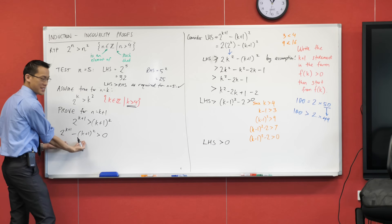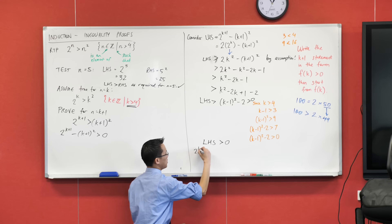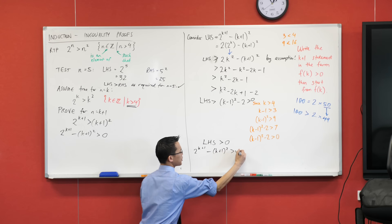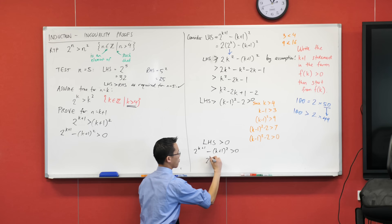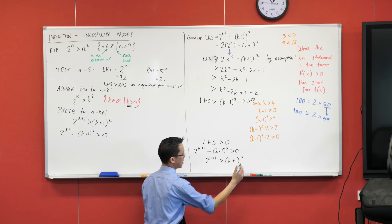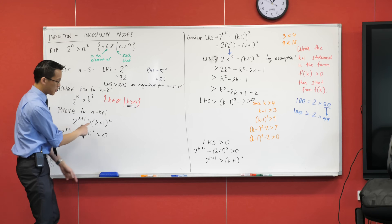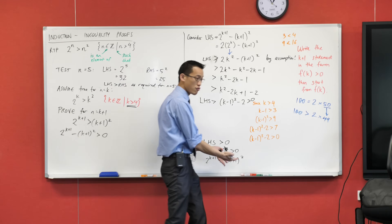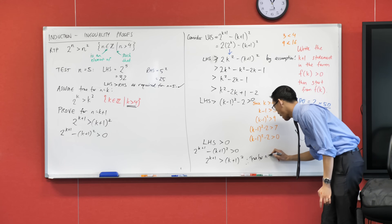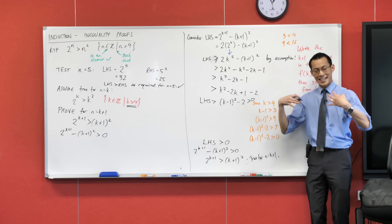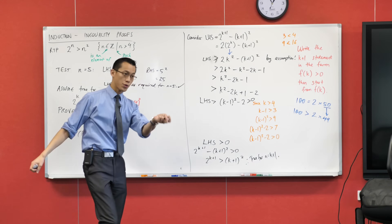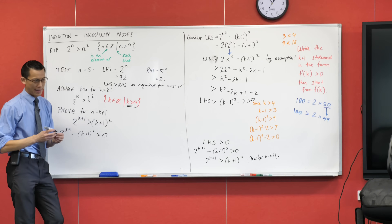What is the left-hand side? It's 2 to the k plus 1 minus k plus 1 all squared. Just to make this nice and complete, I'm going to write it in the form that I originally put it when I had the k plus 1 statement. Therefore, it's true for n equals k plus 1. I've proven this true by the principle of mathematical induction.